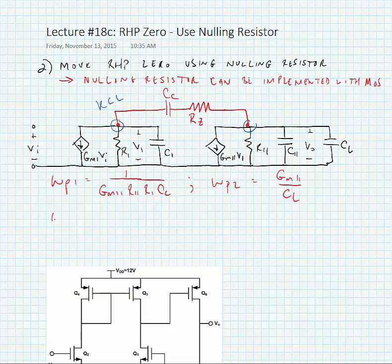We introduce a third pole frequency, omega P3 which is equal to 1 divided by RZ times the capacitance from the first stage. And finally we still have a zero, omega Z1 which is equal to 1 divided by CC times 1 over GM2 minus RZ.